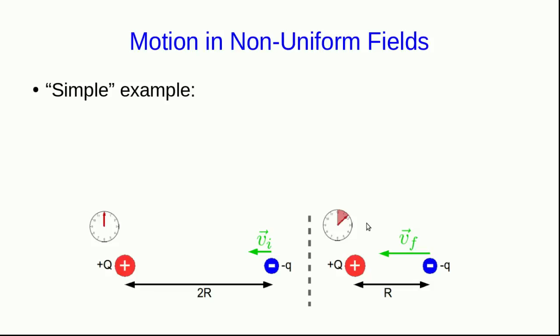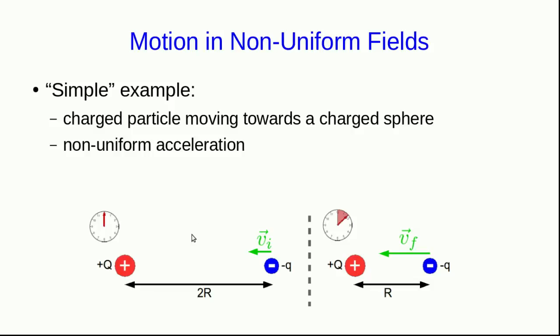Motion in non-uniform fields is much more complicated. Here's a simple example. Let's say we have a charged particle moving towards some larger charge, such as a charged sphere. And perhaps this is a negative particle, and it's moving towards a positive sphere. Note that the electrical force on this particle will be attractive. In this case, that means it'll be to the left, which is in the direction of motion. And so this charge is going to speed up as it moves at the sphere. However, we also know that the field is getting stronger as the charge moves closer to this sphere, and so the acceleration will not be uniform.